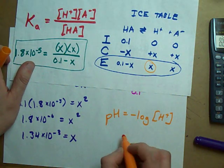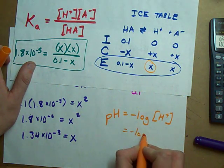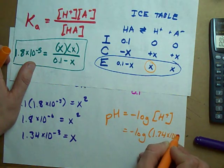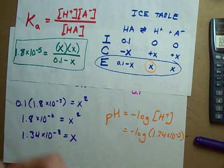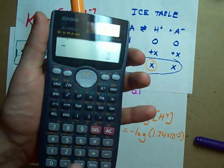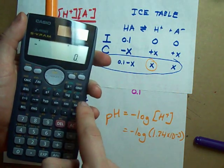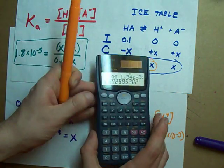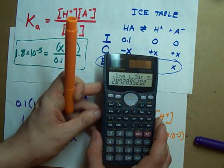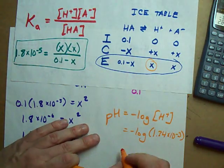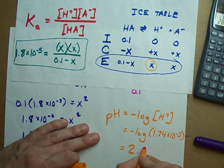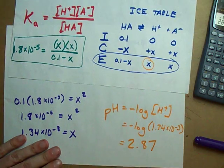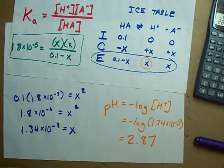X is 1.34 times 10 to the negative 3. Plug that into your calculator and press enter. Negative log, 1.34 times 10 to the power of negative 3. Can you see that? I got 2.87, which is also the answer that the textbook I stole this question from got. It's the same answer in the textbook.